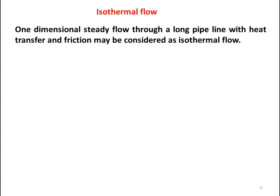One-dimensional steady flow through a long pipeline with heat transfer and friction may be considered as isothermal flow. Earlier we discussed isentropic flow, which is the most idealistic situation — no heat transfer and no friction. In Fanno flow there is no heat transfer but we consider the effect of friction, and in Rayleigh flow there is no friction but we consider the effect of heat transfer.